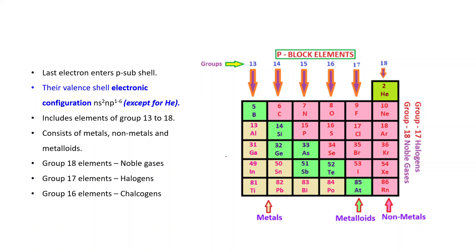P-block elements are those in which the last electron enters the P sub-shell. Their valence shell electronic configuration can be represented as ns² np¹⁻⁶, except for helium. Although helium doesn't fit this configuration, its properties resemble the remaining members of group 18, so helium is also placed in P-block elements. It includes elements of groups 13 to 18.